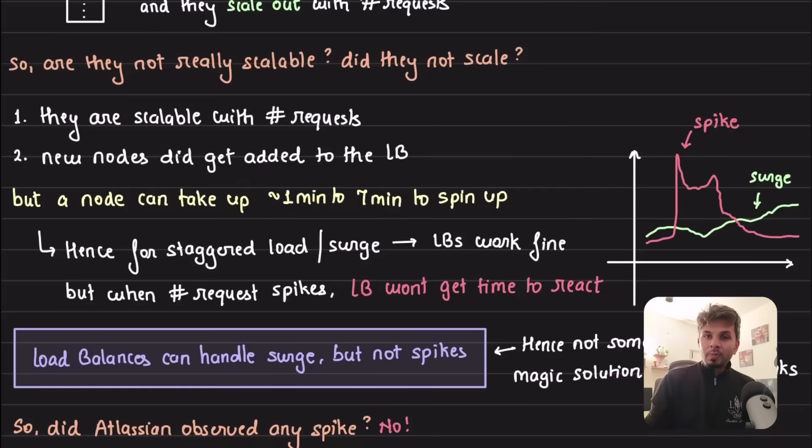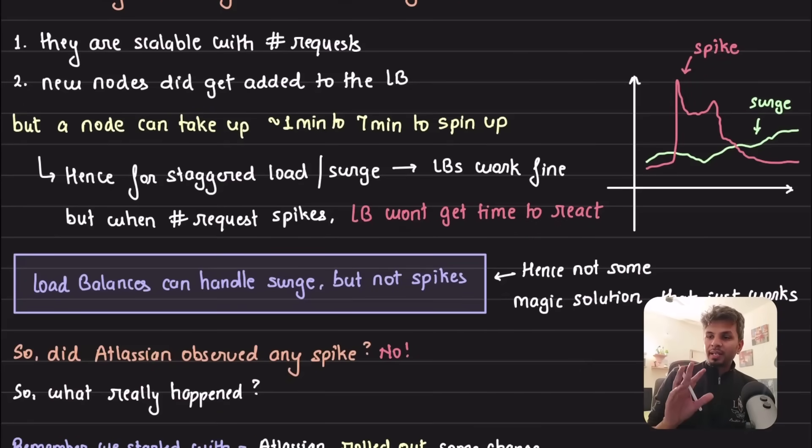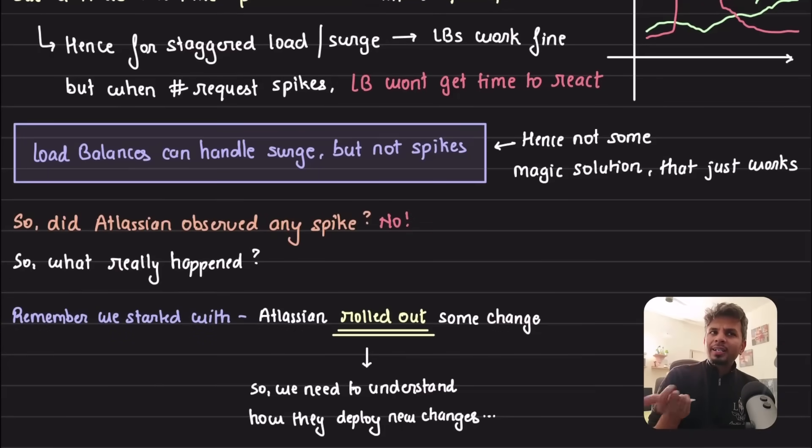Load balancers are not magic. This is where your load balancers are okay when there are surges in requests, but they are not so good when there are sudden spikes. These are the spikes we typically see during hot sales or during marketing events when a lot of users come in at a very short time. Load balancers can handle surges but they cannot handle spikes. Load balancers are not infinitely scalable for all cases, be mindful of that.